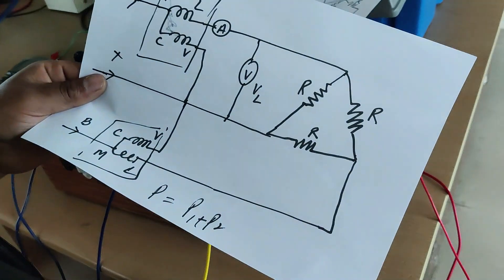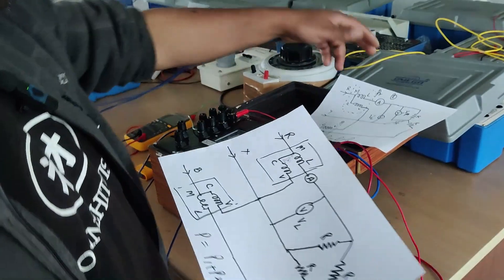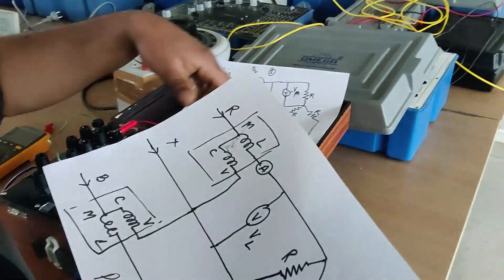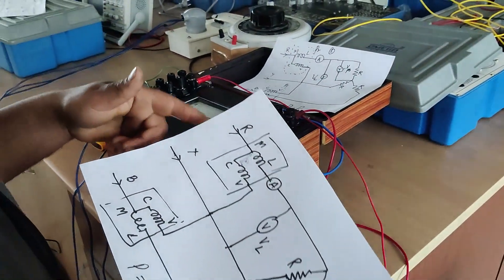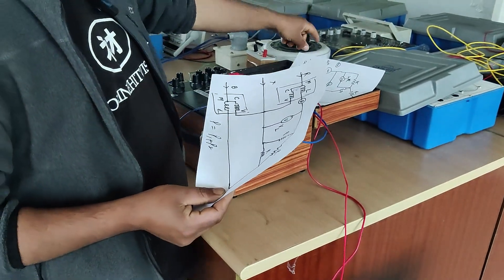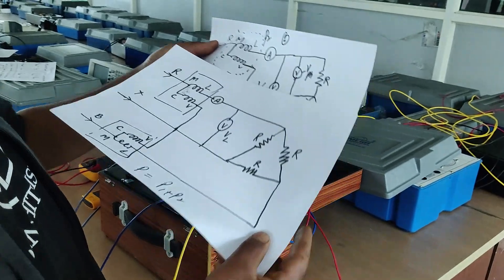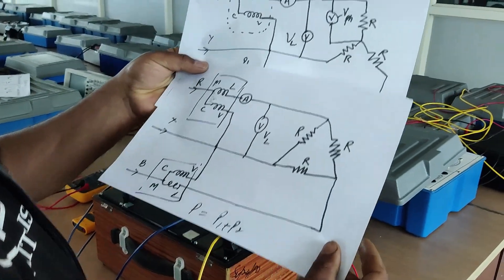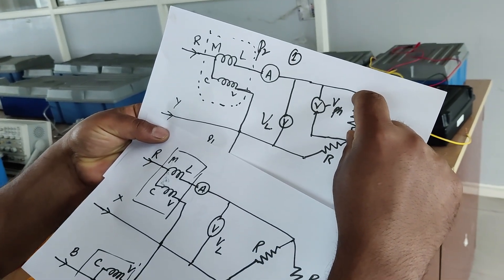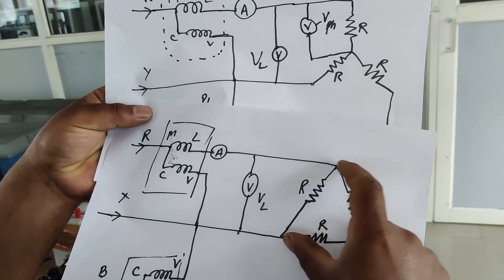We will have the same resistance R in each phase of the load bank. The same resistance will be connected first in star, then in delta, and we will verify the amount of power consumption. In case of delta it must be three times that of star. In star connection, the phase voltage appears across the resistance. But in delta connected network, the line voltage appears across the resistance.